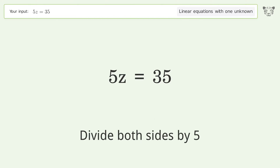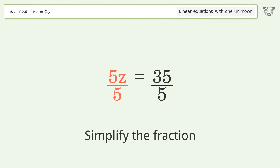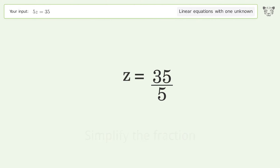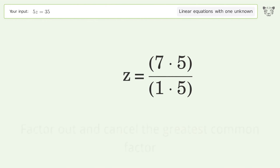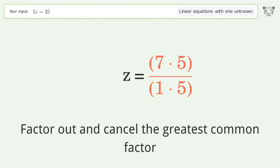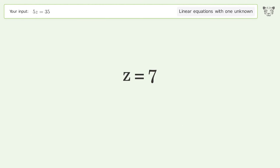Divide both sides by 5 and simplify the fraction. Find the greatest common factor of the numerator and denominator, then factor out and cancel the greatest common factor. And so the final result is z equals 7.